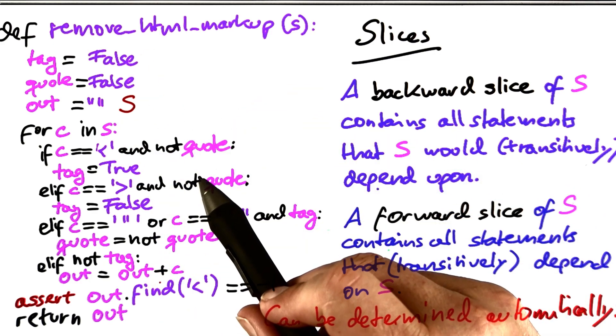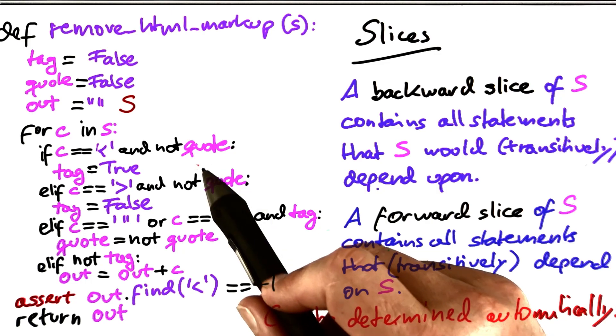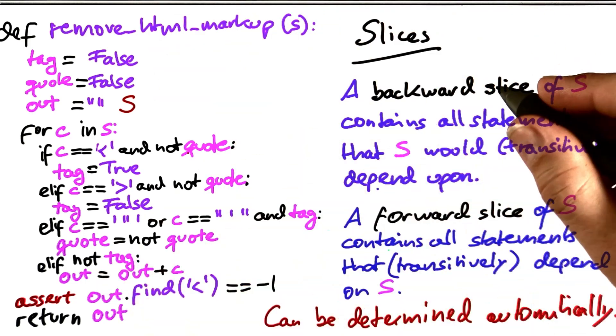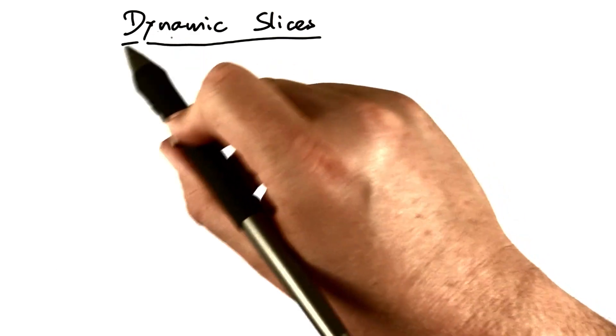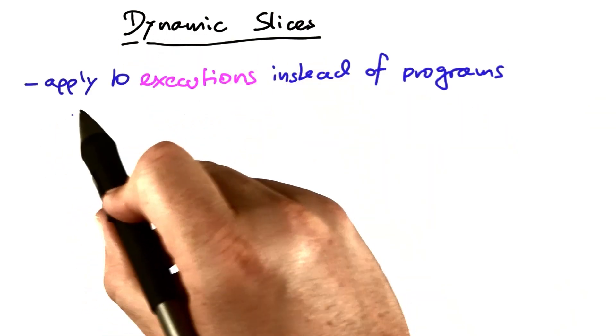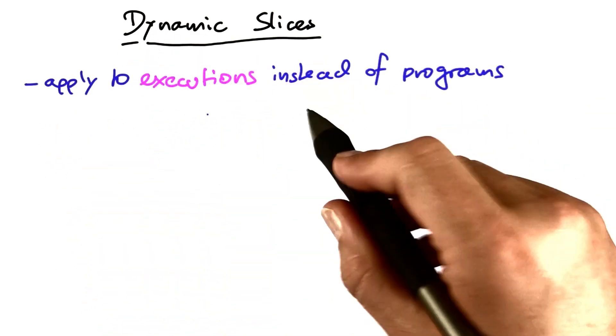Such slices become even more interesting, though, when we apply them not only to programs but to actual executions. These are then called dynamic slices. These apply to executions instead of programs.